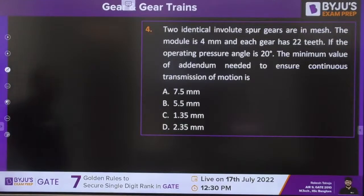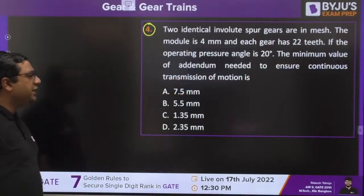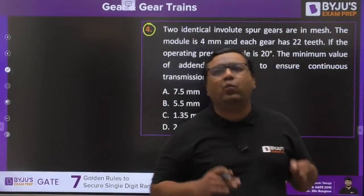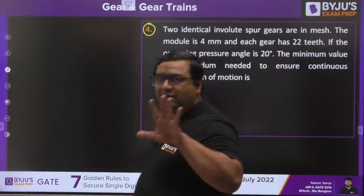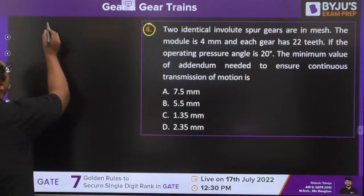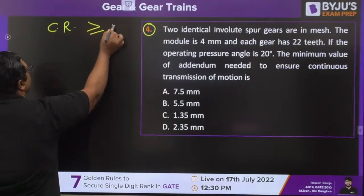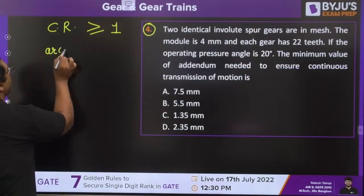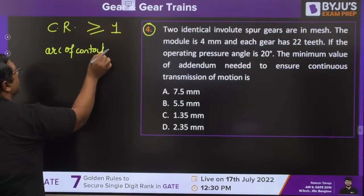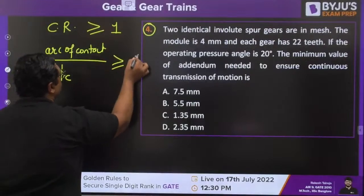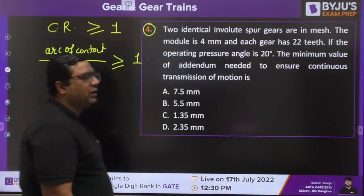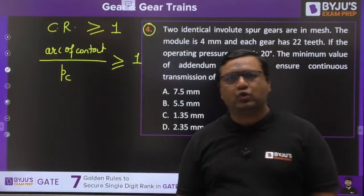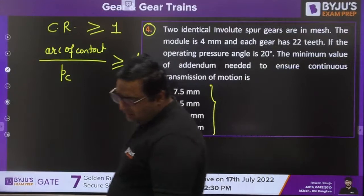Question 4: Two identical involute spur gears are in mesh. Module = 4 mm, each gear has 22 teeth, operating pressure angle = 20°. Find the minimum addendum to ensure continuous transmission of motion. For continuous transmission, contact ratio ≥ 1. Contact ratio = arc of contact / circular pitch. This is a slightly lengthy calculation — set up the formula and solve.